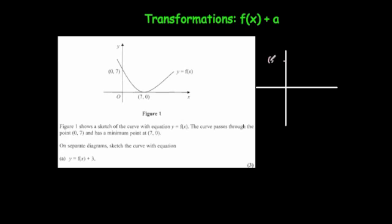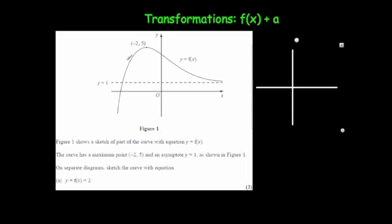So that coordinate would be (0, 10). This point, instead of being seven across and zero up, will now be seven across and three up, so it would move up to (7, 3). The curve would look exactly the same but just translated up. The y-intercept moves from (0, 7) up to (0, 10) and the minimum point moves from (7, 0) up to (7, 3).